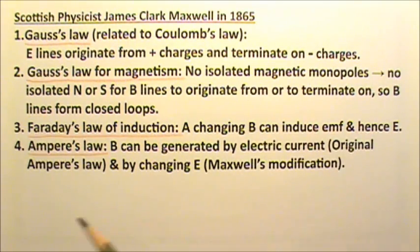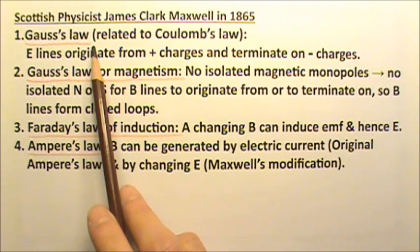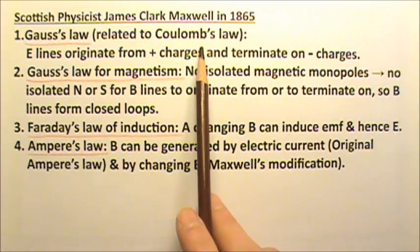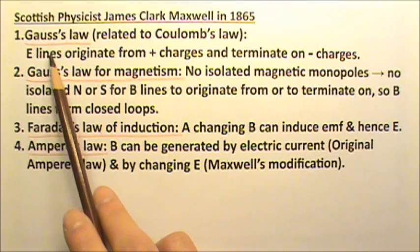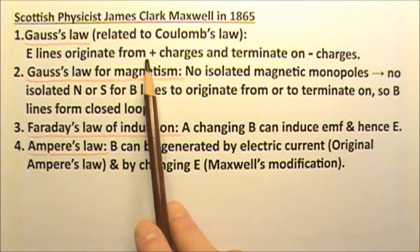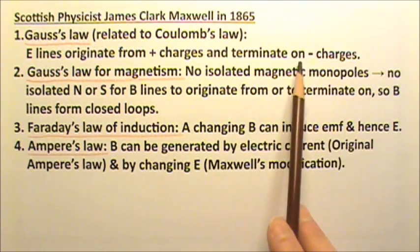The four laws are Gauss's law, which is related to Coulomb's law. Basically, it says that electric field lines originate from positive charges and terminate on negative charges.